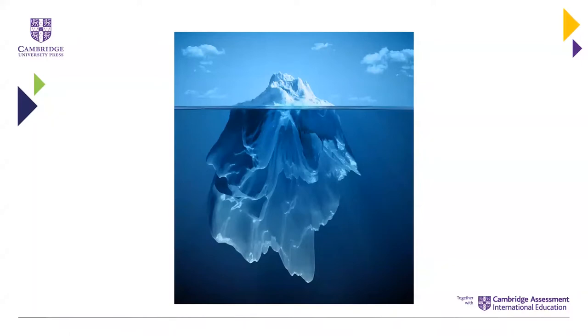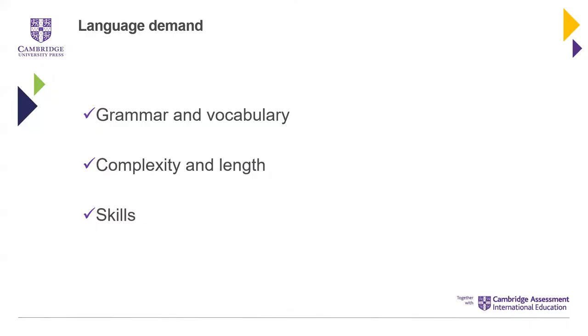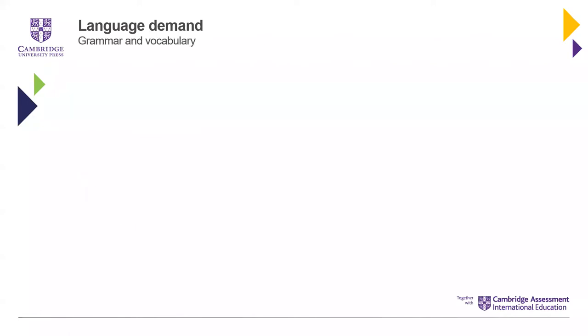The second element to consider is recognising the language demand — the other side of the coin. When we think about this, there are three sub-areas: grammar and vocabulary is possibly the most obvious, but just as important are the complexity of the language and also its length. The third area is the skills — the language skills. What do we want our students to do with the language? Are they listening or reading, which are receptive skills? Or do we want them to produce something — to speak or to write? We have to consider all three when thinking about the demand in our lesson content.